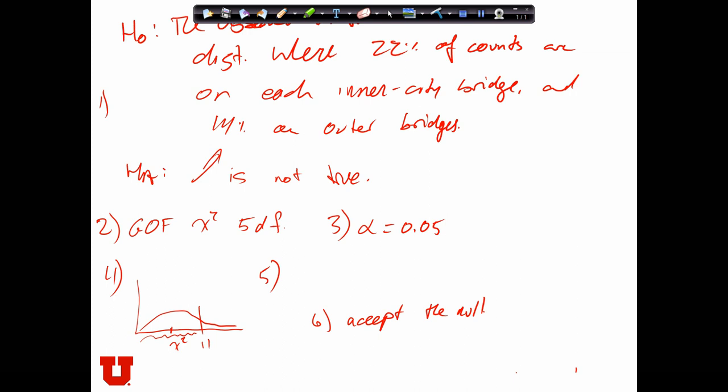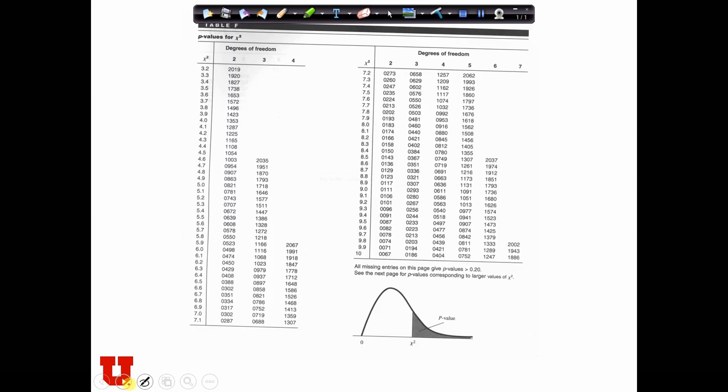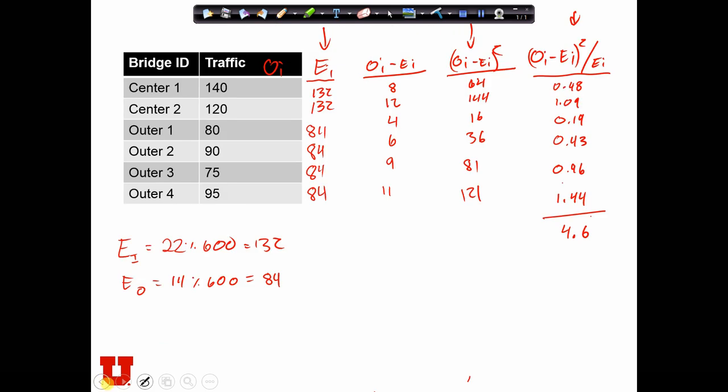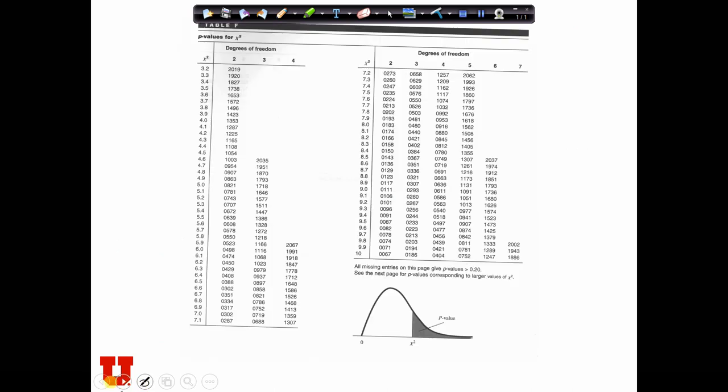I just want to take a moment and show you how we would make a decision about step 6 without having to find the critical value, just by using the p-value approach. Let's go to our table over here. We have 5 degrees of freedom, and our test statistic is 4.6. So what we need to do is find the p-value of 4.6 when we have 5 degrees of freedom.